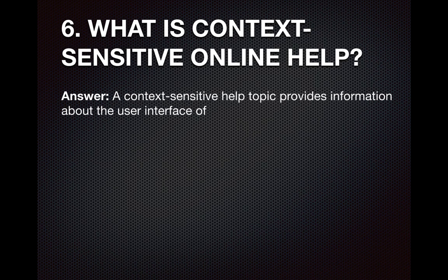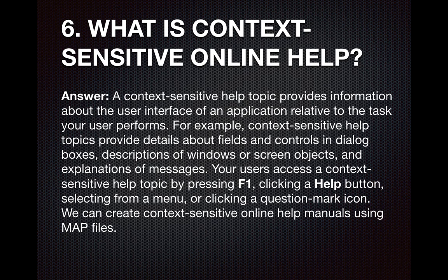Question number six: What is context-sensitive online help? A context-sensitive online help topic provides information about the user interface of an application related to the task the user performs — for example, details about fields and controls in dialog boxes, descriptions of windows or screen objects, and explanations of messages. Users access a context-sensitive help topic by pressing F1, clicking a Help button, selecting from a menu, or clicking a question mark icon. We can create context-sensitive online help manuals using a map file, and map IDs are given to pull up the data when the user clicks the F1 button.